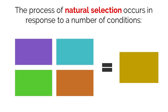In order for evolution by natural selection to take place, there are a number of conditions that need to be met. First, variation must exist in the population. This is due to randomness and simply means that all organisms do not possess the same phenotype.